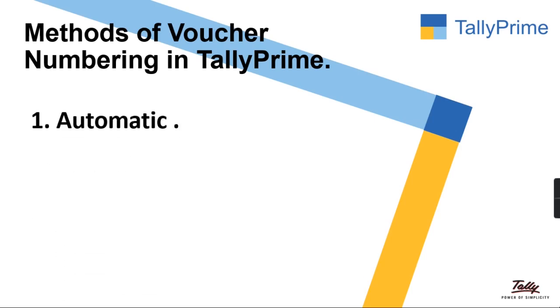The first method is automatic. If you provide the voucher numbering as automatic, by default Tally will pick the voucher number by itself.